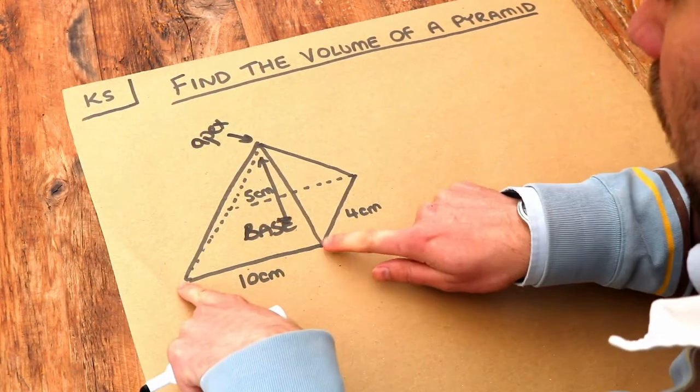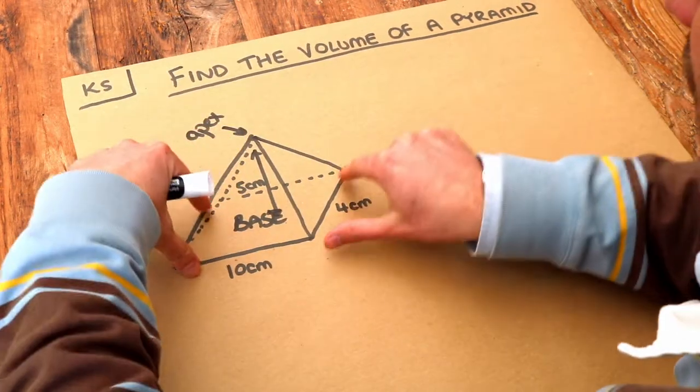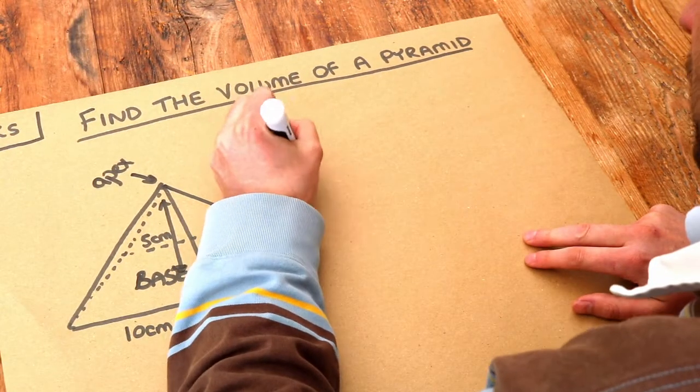This is in contrast to say a prism, where from each of the vertices on the base the edges just go up and you have the same shape, a rectangle, going all the way up.